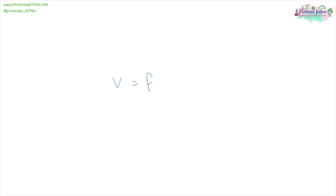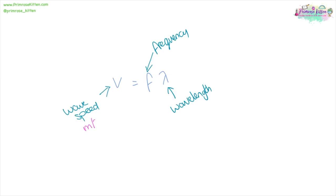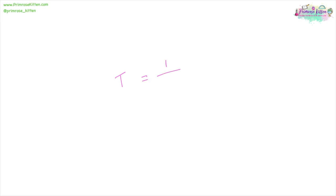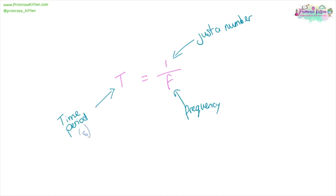To work out the speed of a wave — wave speed — we can take the frequency and multiply it by the wavelength. Our units of speed are in metres per second. Frequency is in hertz, capital H lowercase z, and wavelength is in metres. If we want to measure the time period for something, that is one over the frequency. Time is measured in seconds and frequency is measured in hertz. Do not write lowercase both letters or uppercase both letters because they are wrong.